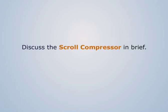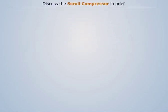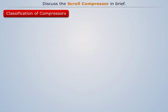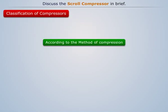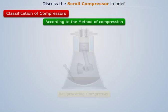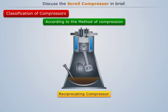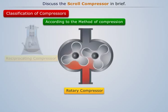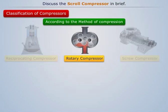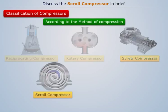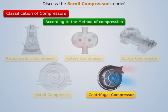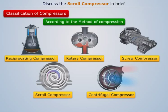Let's discuss the scroll compressor in brief. According to the method of compression, compressors can be classified into five types: reciprocating compressor, rotary compressor, screw compressor, scroll compressor, and centrifugal compressor. Now let's discuss the scroll compressor in brief.